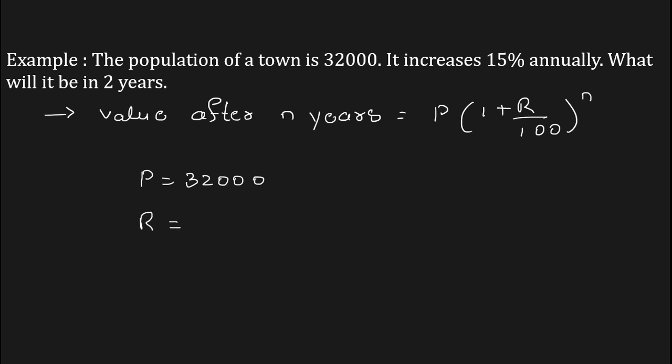R is equal to the given appreciating rate per annum, which is 15%. And n is equal to the given number of years, that is 2.